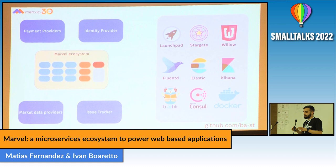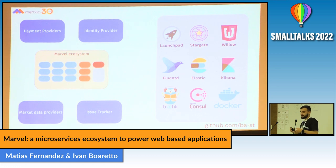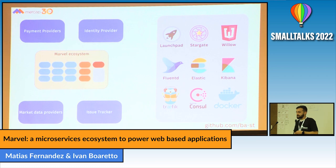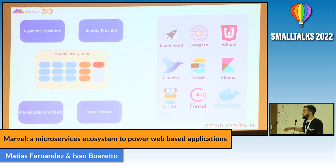This is the Marvel ecosystem. Here you see some things it connects to — this is a really simplified model. Another thing this gave us was the ability to easily communicate with external systems, such as payment providers, identity providers, and market data providers. We also connected to issue trackers, so when a user needs to send us feedback, they can do it inside the application and it will reach us in our usual issue tracker. On the left, there are some honorable mentions of things that allowed us to take this infrastructure this far.